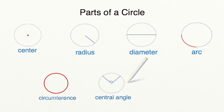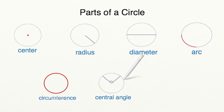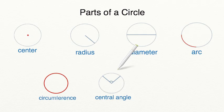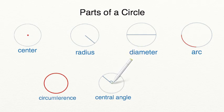A central angle is an angle that originates at the center of the circle. This angle can be acute, right, or obtuse, as long as the vertex of the angle starts at the center of the circle.